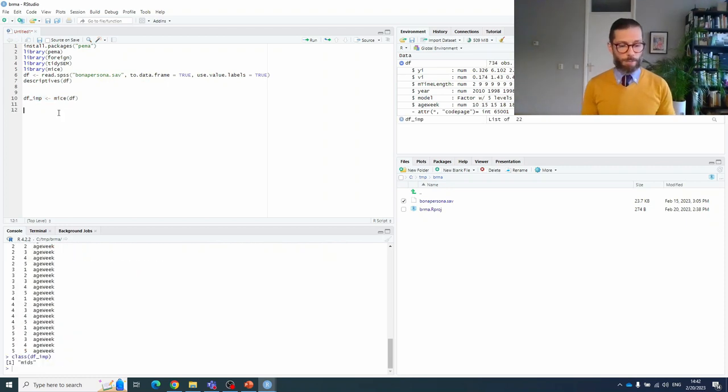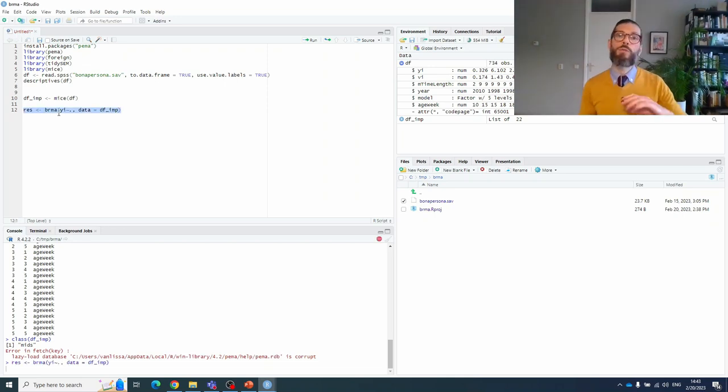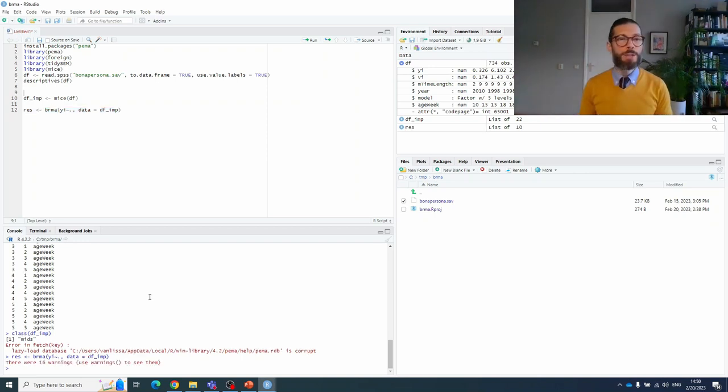So now we can estimate our meta regression model. We want to assign the results to an object. So we'll call that object res. And we'll use the function brma. And now we want to predict yi from all moderators. That's what the period represents. And the data we use is dfimp. And that is just going to run the analysis for each of the imputed data sets and combine the results. The analysis is now finished. I had to cut in the video because it takes a long time to estimate the model.